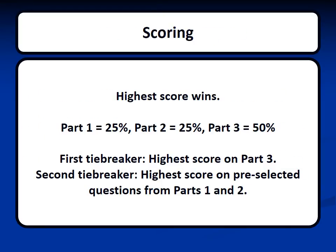In scoring for the event, Parts 1 and 2 are each worth 25% of the score, while Part 3 is worth 50%. This means students will have to use their time wisely to receive the most points. There are two tiebreakers: first, the highest score on Part 3, and second, the highest score on pre-selected questions from Parts 1 and 2.